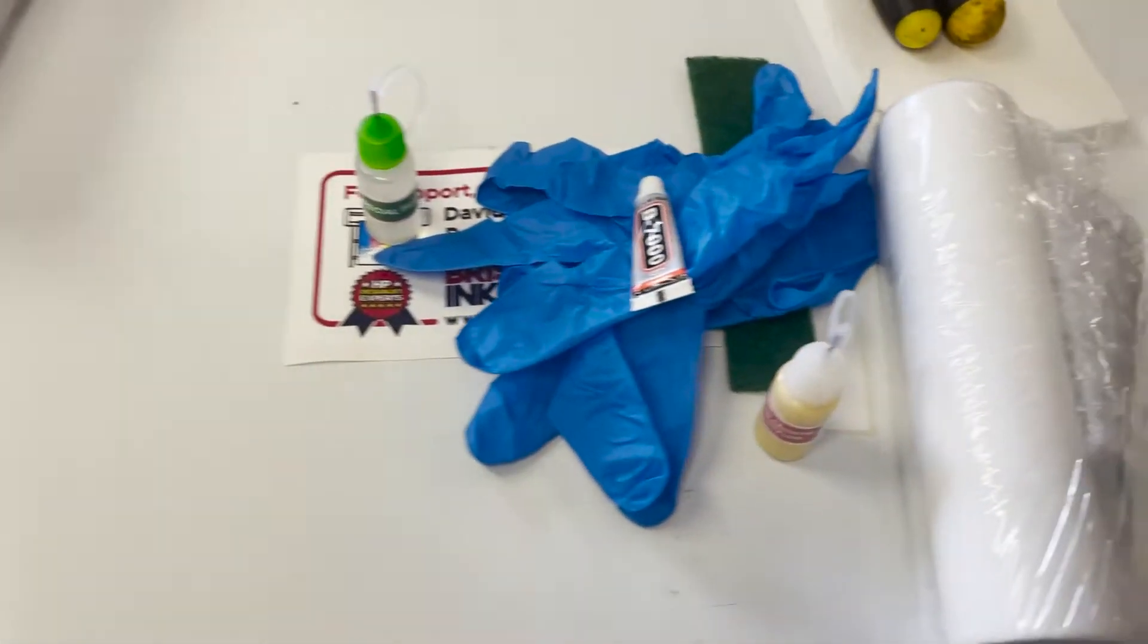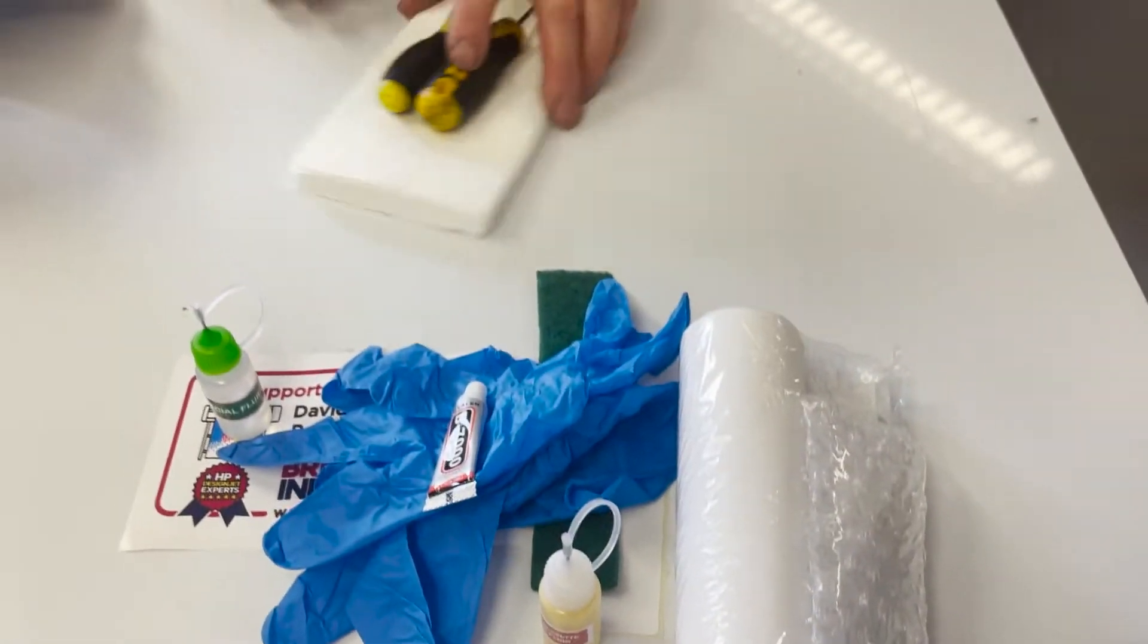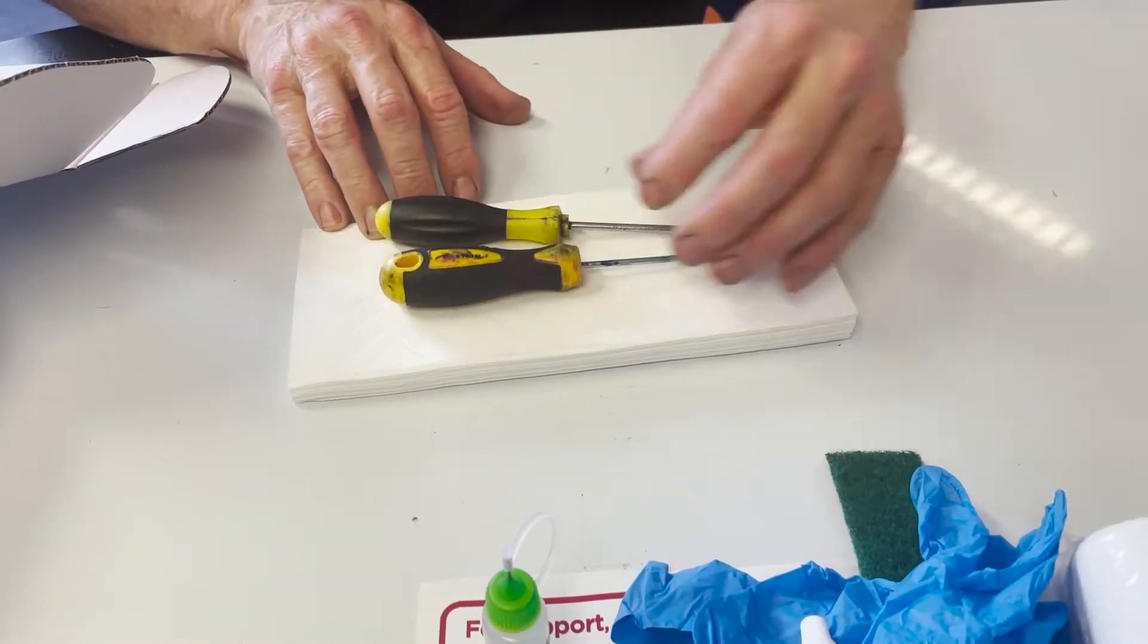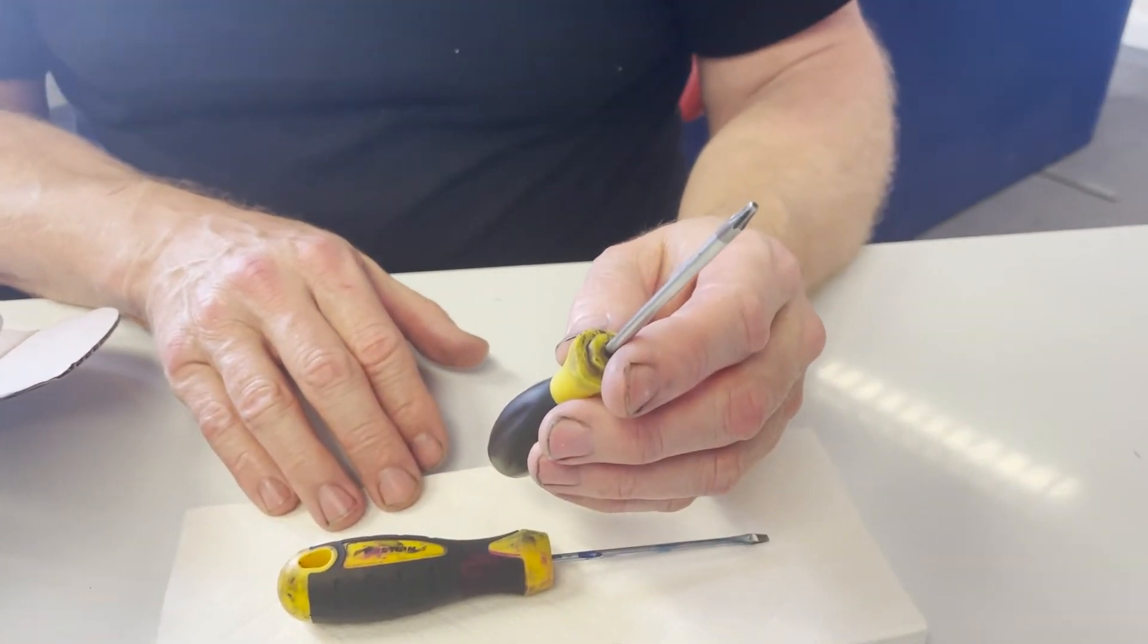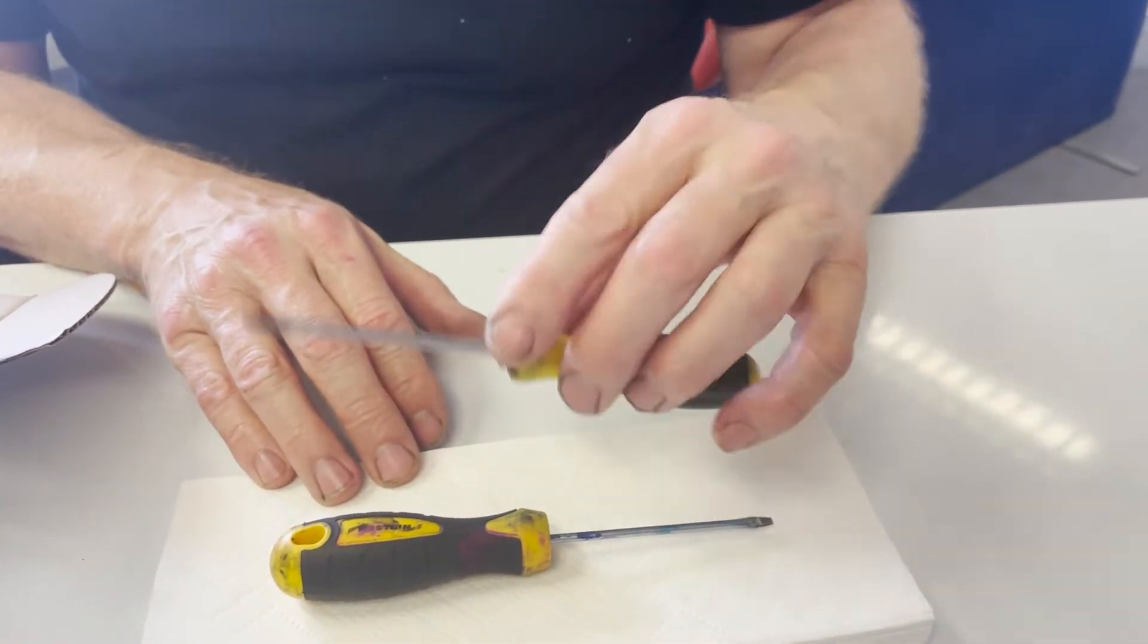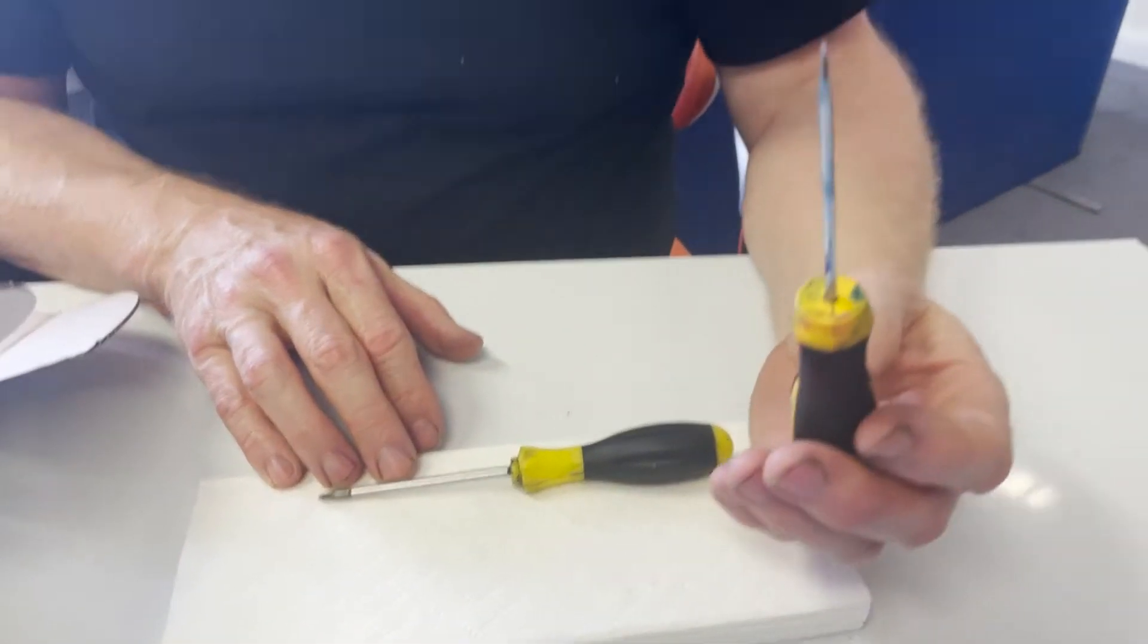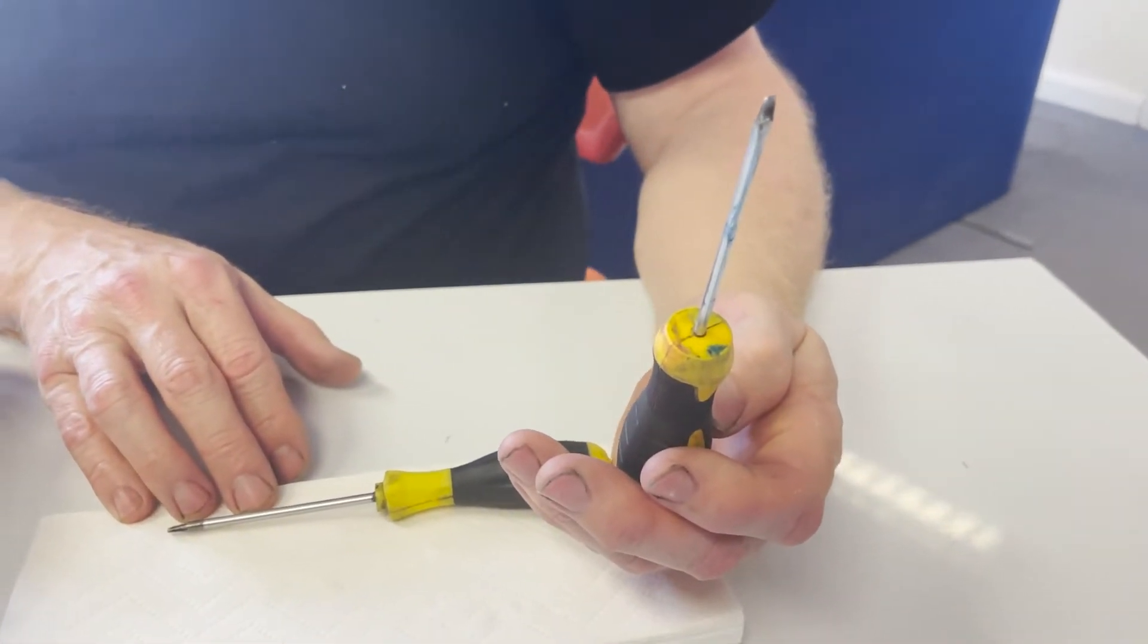On top of that, you will need some towel material to keep yourself clean, a torque driver to remove one of the cogs inside the cassette, and something to act as a pry to open the top of the cassette.